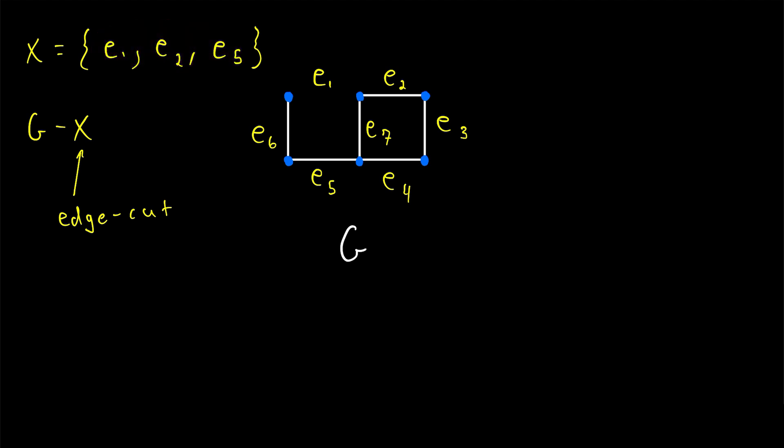So that will make it impossible to travel between certain pairs of neighborhoods. If we close down the roads E1, E2, and E5 at the same time, we can't get from here to here. So that's just an example of when edge cuts might be of interest to someone.